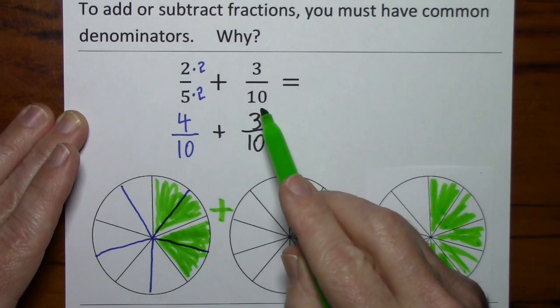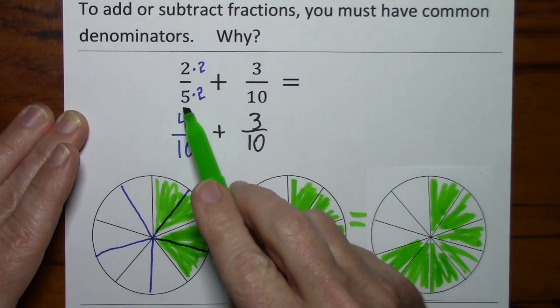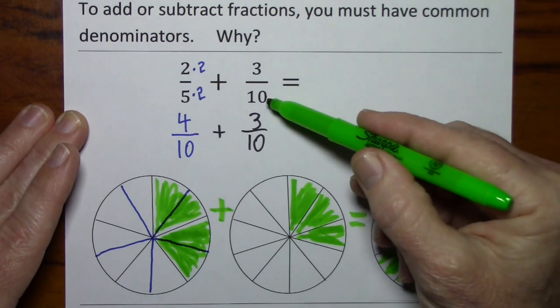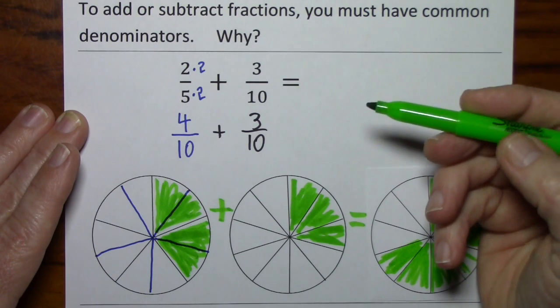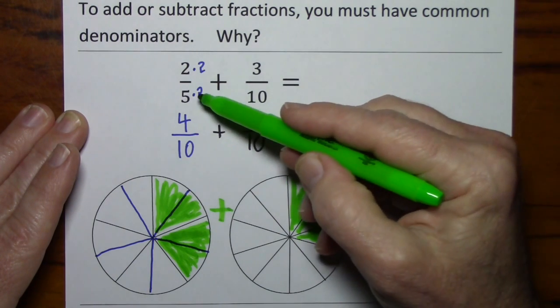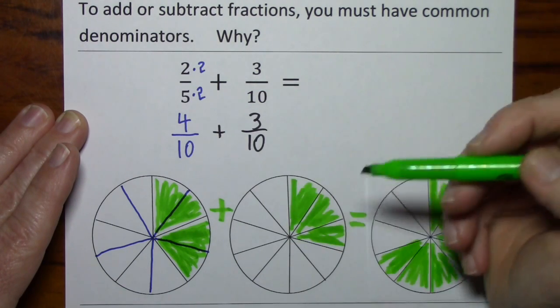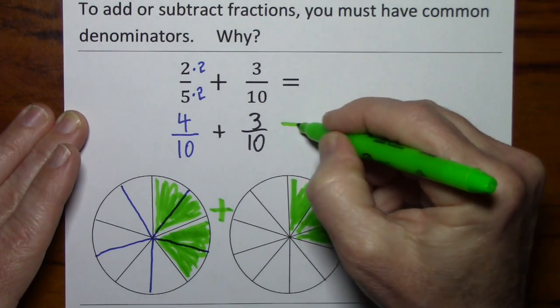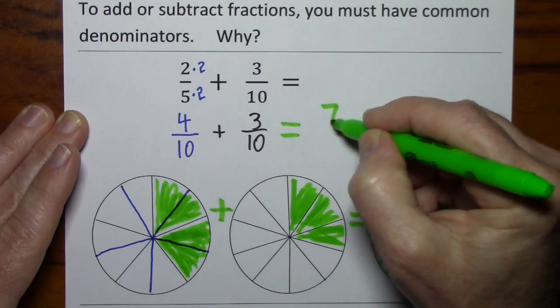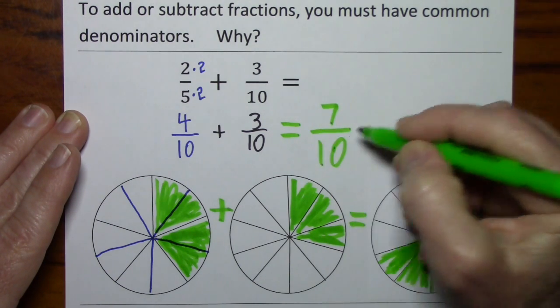So a quick review: we need common denominators. We select 10 as the least common denominator. You multiply times 2 and times 2. That gives you your common denominators. You simply add the numerators and keep the denominator.